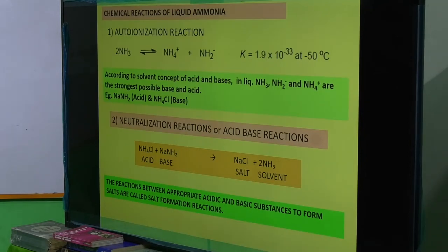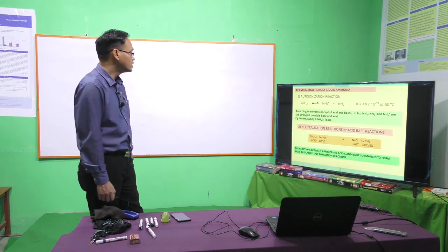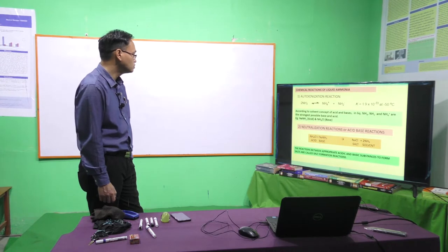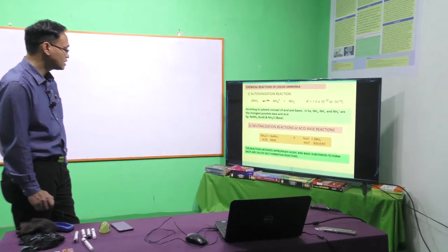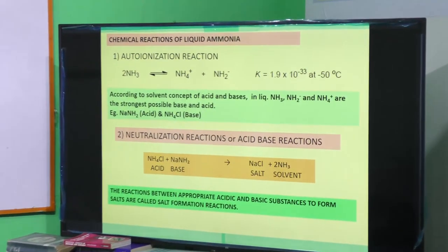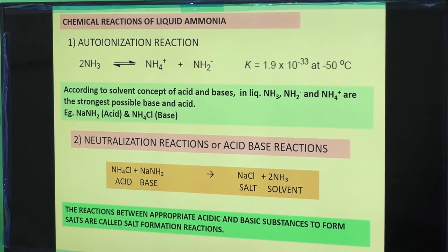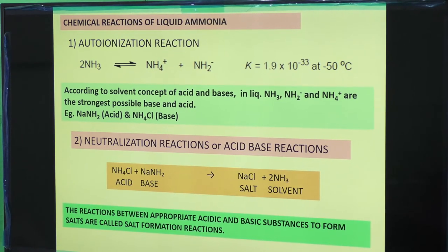Now let us look at important reactions of liquid ammonia. The first and most important is the auto-ionization reaction. Ammonia solvent molecules break up into ammonium ion (NH4+) and amide ion (NH2−). According to the solvent concept of acids and bases, amide ion and ammonium ion are the strongest possible base and acid respectively in liquid ammonia.